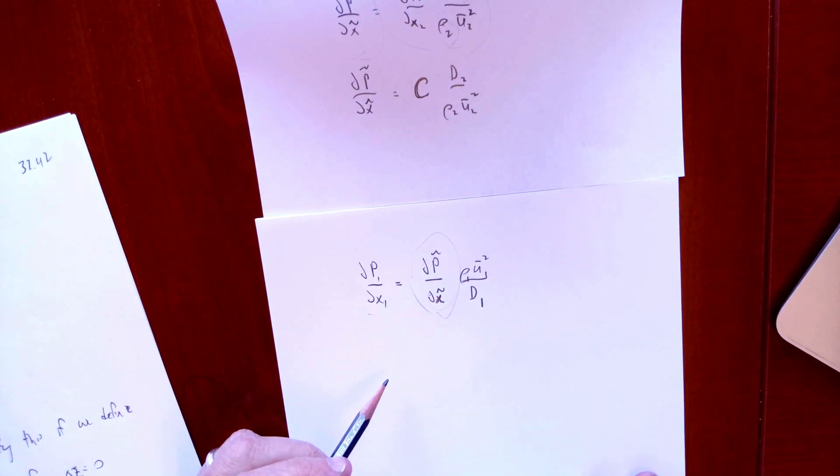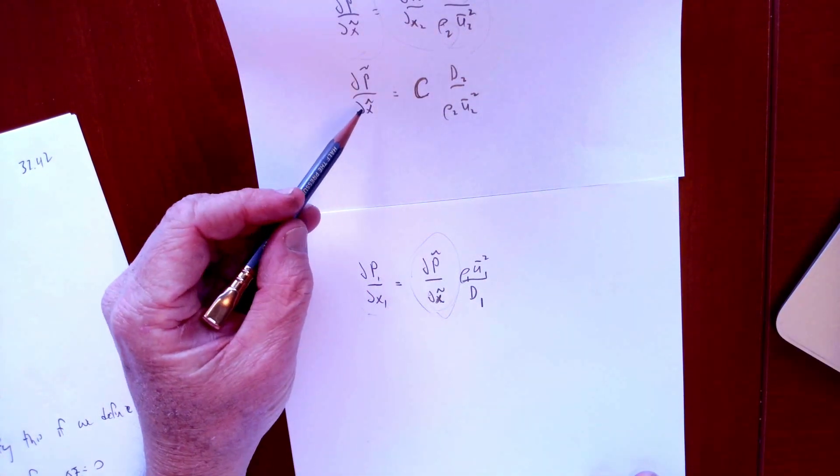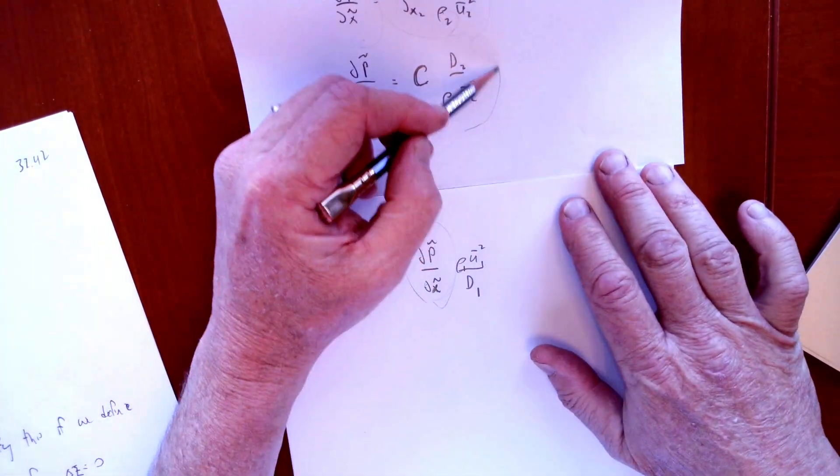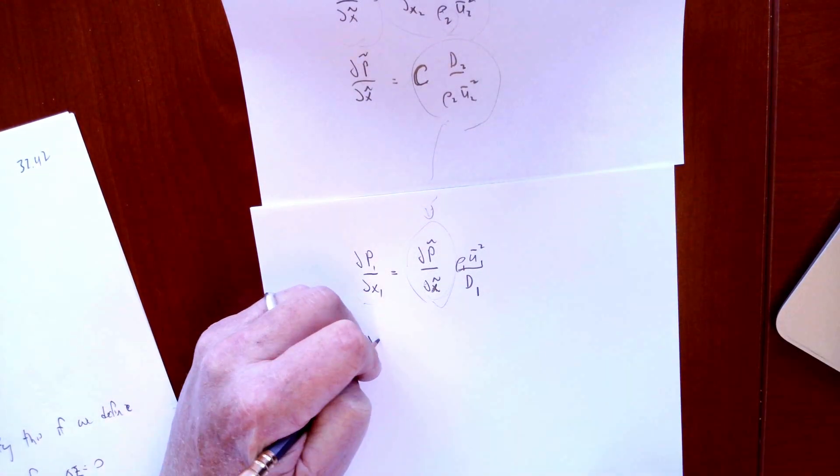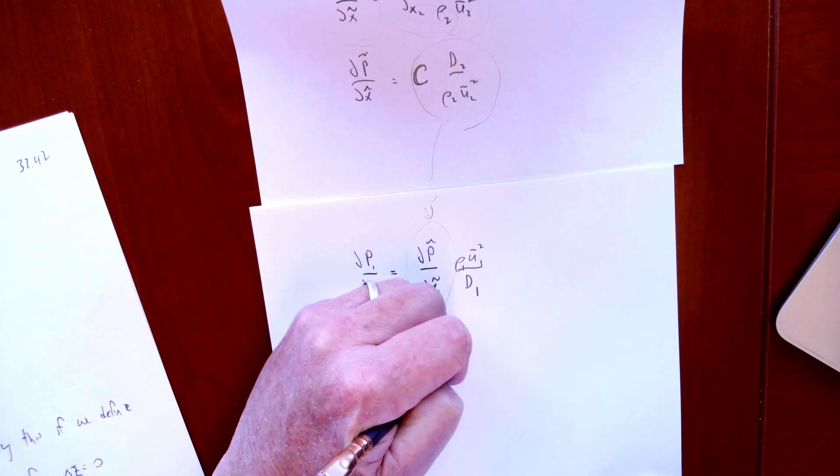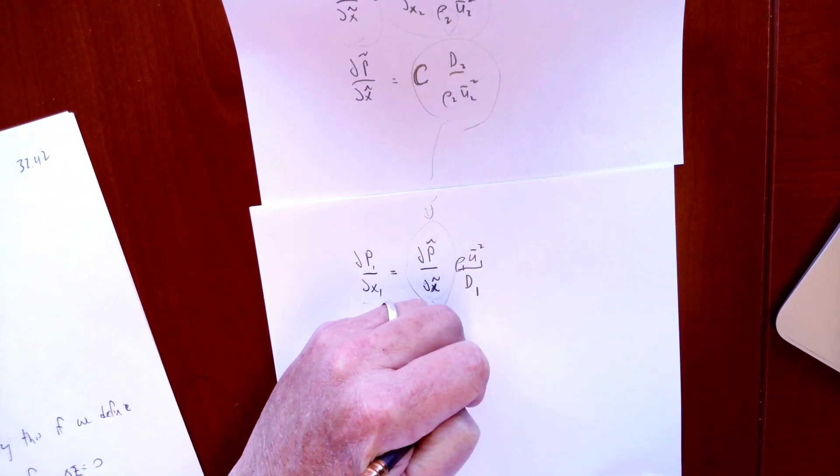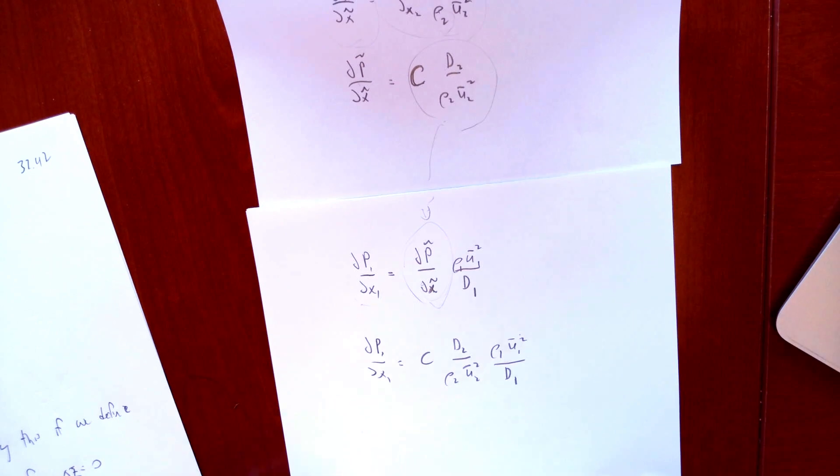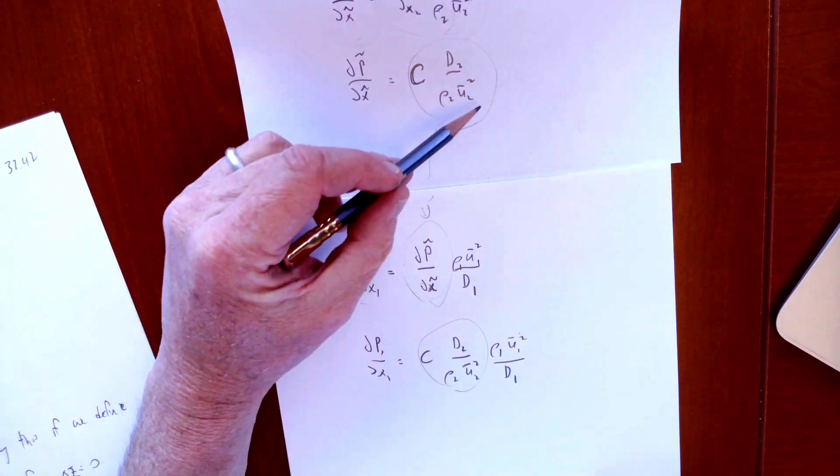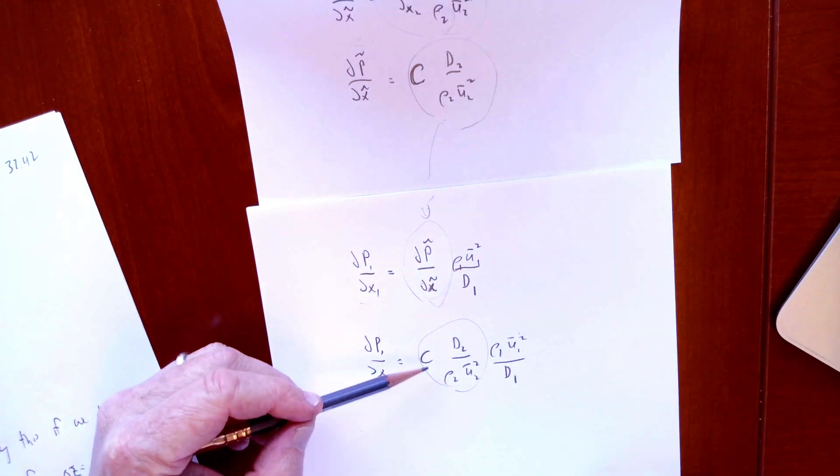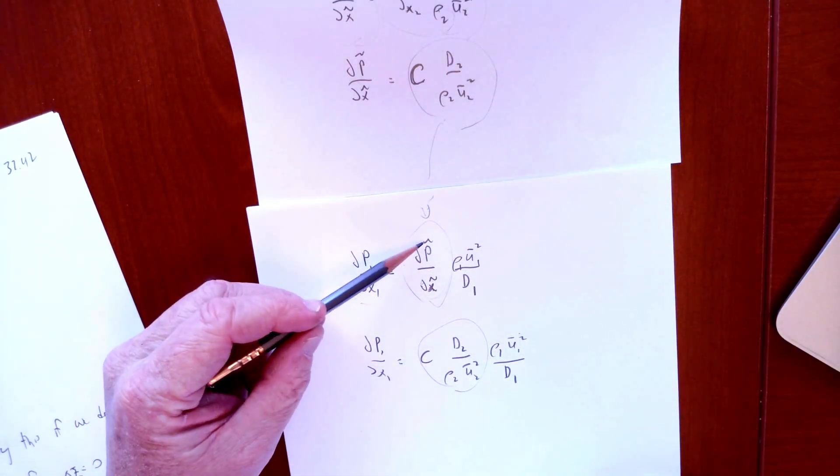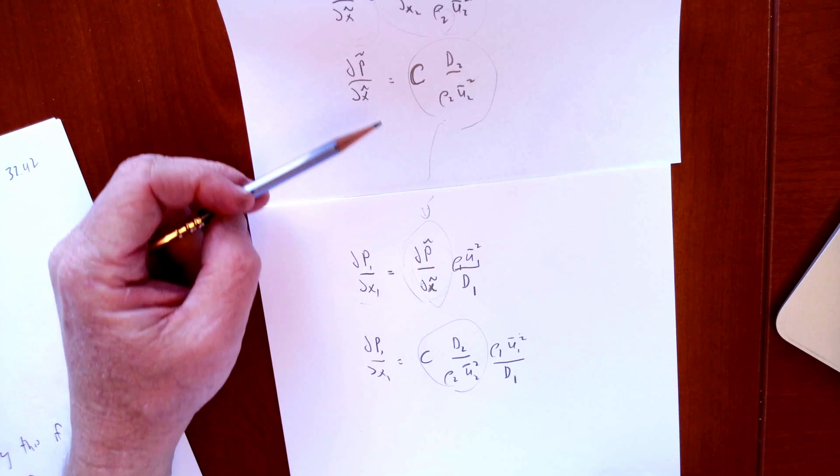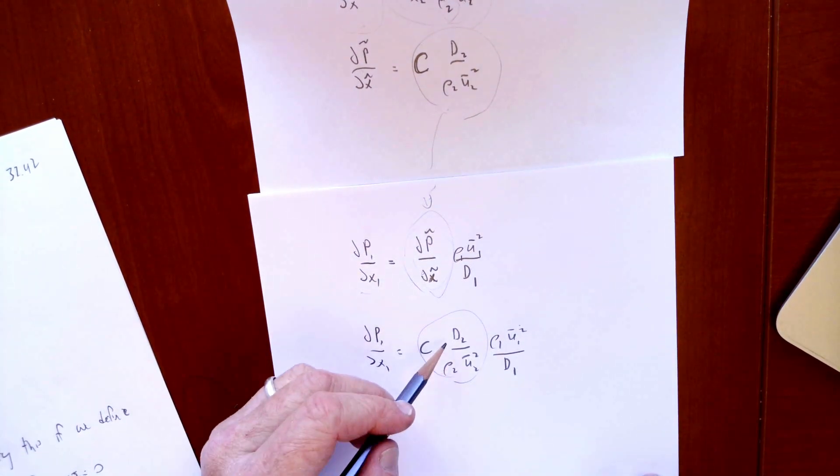But we now know the value for this, because they're geometrically similar, the two results in the dimensionless space are going to be the same. So we can actually plug in this result into here. We've just plugged in the experimental result we got for the dimensionless DP/DX, because the dimensionless DP/DX does not change, because these are geometrically and dynamically similar flows.